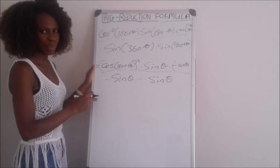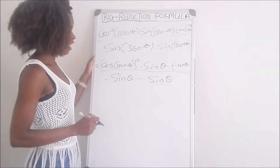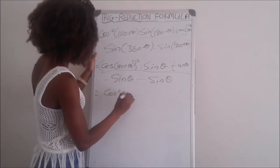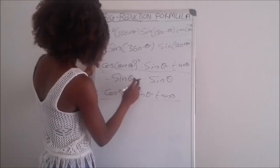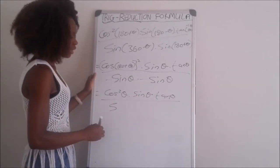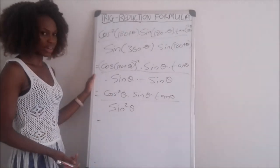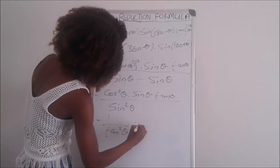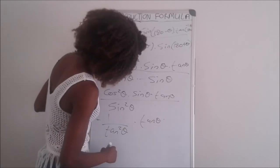So we have cos squared theta multiplied by sine theta multiplied by tan theta, divided by negative sine theta times negative sine theta. The two negatives in the denominator multiply to give positive, so the denominator is sine squared theta. Cos squared theta over sine squared theta gives 1 over tan squared theta, then multiplied by tan theta and multiplied by sine theta.